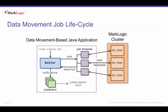Data Movement is based on an asynchronous job model of interaction with MarkLogic. You create a job, represented by a batcher object, configure its characteristics, and then start the job. Your application does not block while the job runs. Rather, you interact with the job asynchronously via one or more event listeners, represented by a batch listener. Once you configure and start a job, the underlying API distributes the workload for you, both across the resources available to your client application and across the MarkLogic cluster.